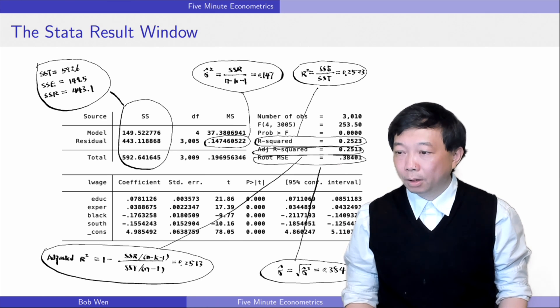In the upper part of the window, most of the statistics relate to the total sum of squares SST, the explained sum of squares SSE, and the residual sum of squares SSR.